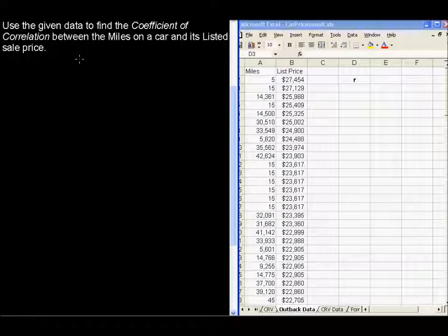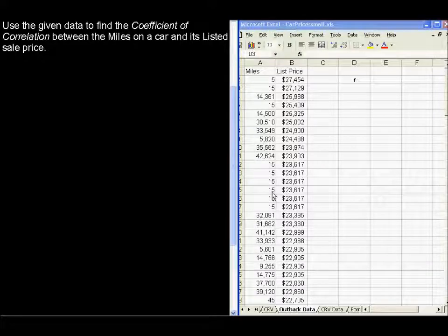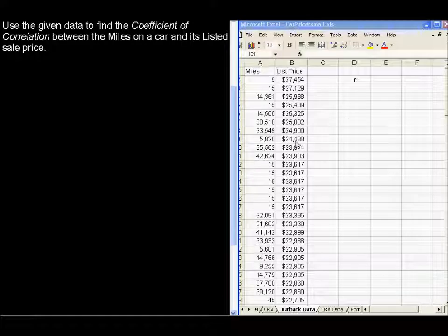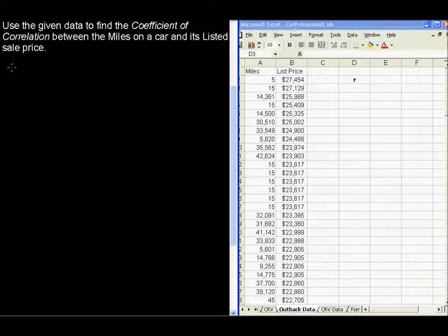Use the given data to find the coefficient of correlation between the miles on a car and its listed sale price. So we have our data over here in our X column and our Y column. Typically that's going to be easiest for you to list your X data first and then your Y data in Excel.